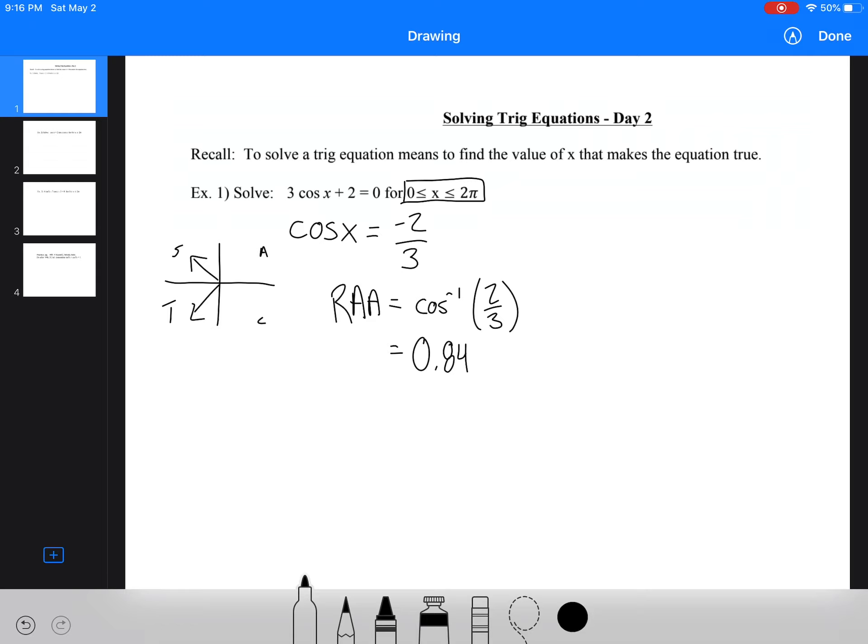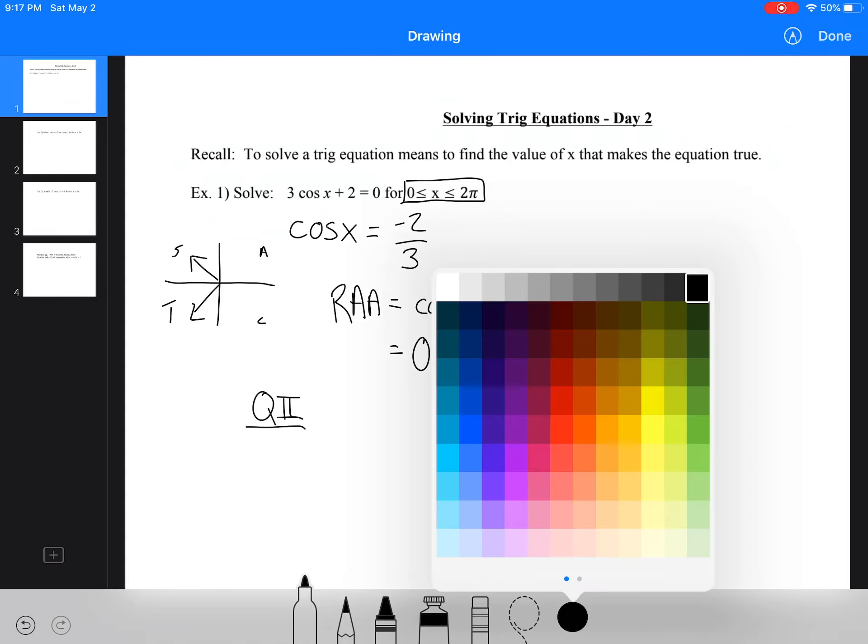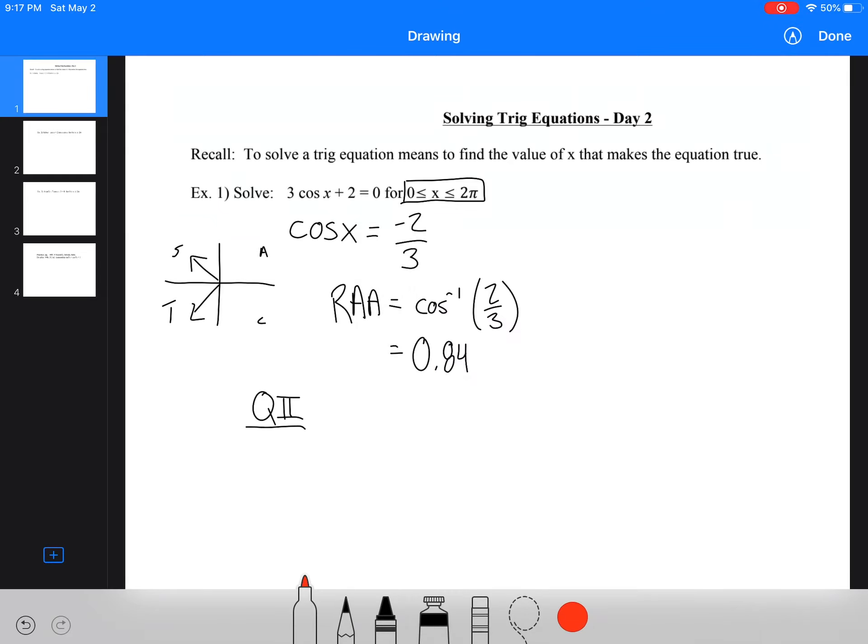Now this is a little bit different from what we're used to, because before we would have a degree here. But we're going to do the same process. I'm going to go through this a little slower. So in quadrant two, normally we know that this whole angle here is 180. But we said that 180 was the same as pi. So what we're going to do is we're going to say that x is equal to pi minus 0.84.